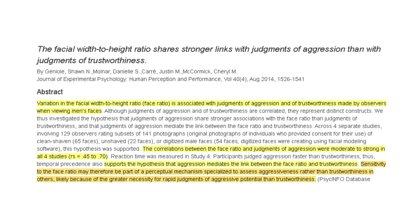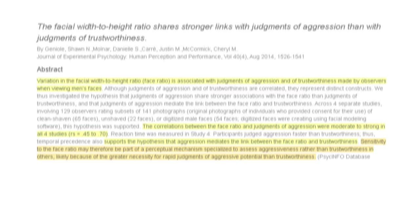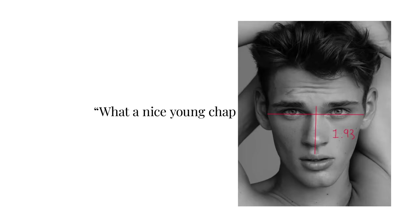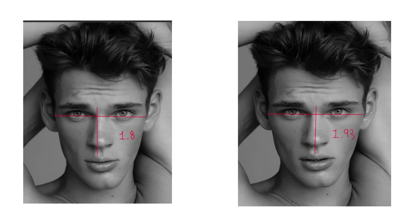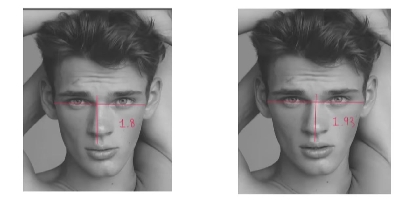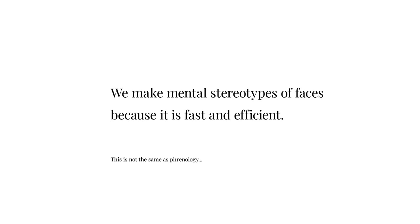Giniel et al noted a connection between facial width to height ratio and judgements of aggression — so not necessarily a person showing aggression, but being perceived as somebody who would show aggression. People may be sensitive to recognising a high FWHR to quickly pick out who is aggressive upon first meeting. Like in a caveman environment, if you met somebody who looked scary, you'd probably avoid them. Whether or not they actually are scary is not something you'd stick around to find out, and judgements of trustworthiness can only come in secondary to that.